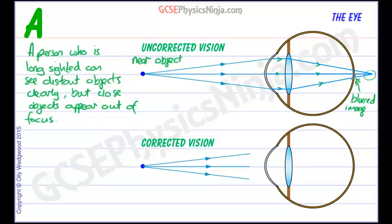So that's the uncorrected vision case. And how could we try and correct this? Well we've got to try and help the eye lens and the cornea by converging those rays a little bit more.